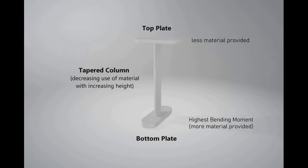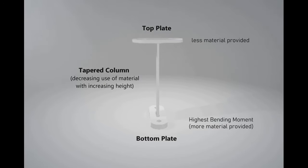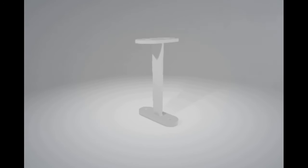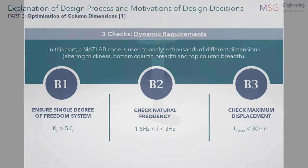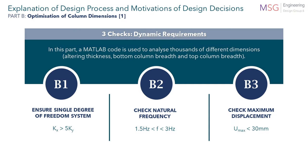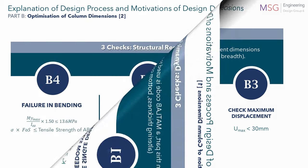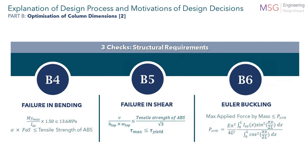This structure is modeled as a one-noded structure with a fixed-in base, where the top mass is assumed to be the attached weights, the top plate, and the top half of the column. A MATLAB code is then run to analyze thousands of designs against three dynamic and three structural requirements.